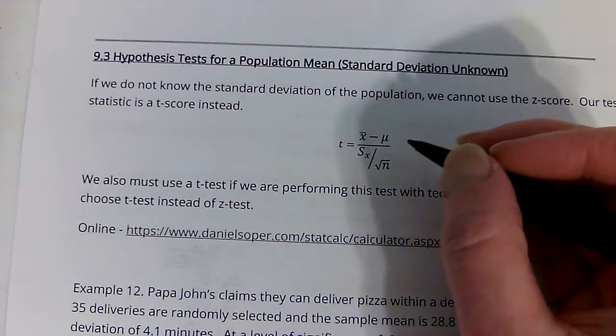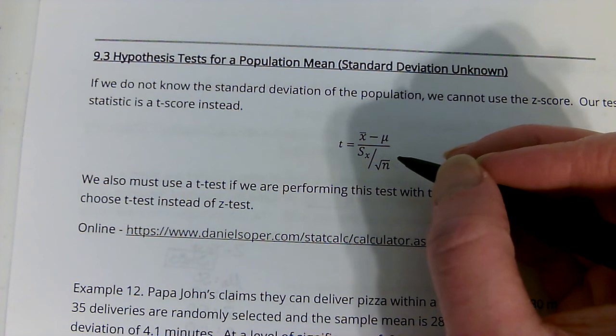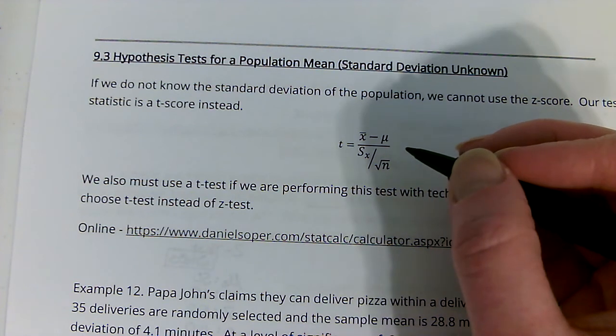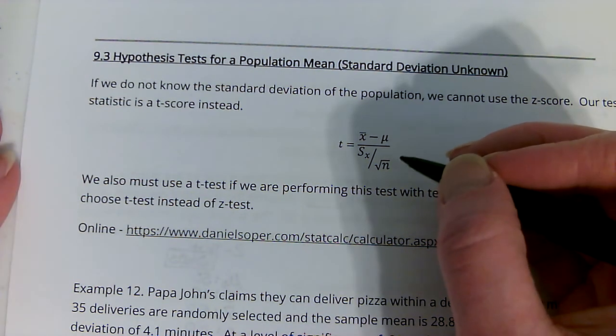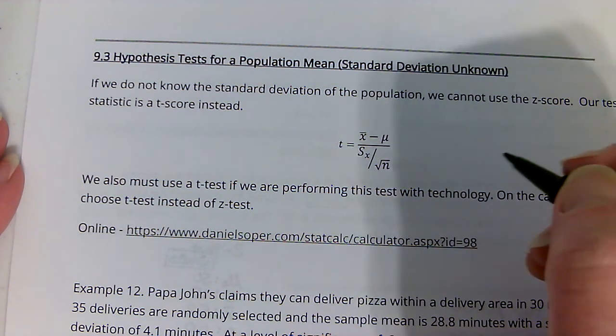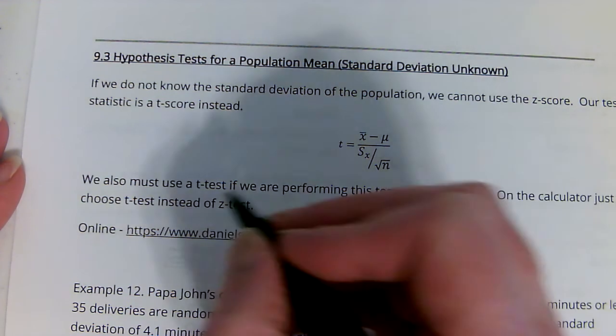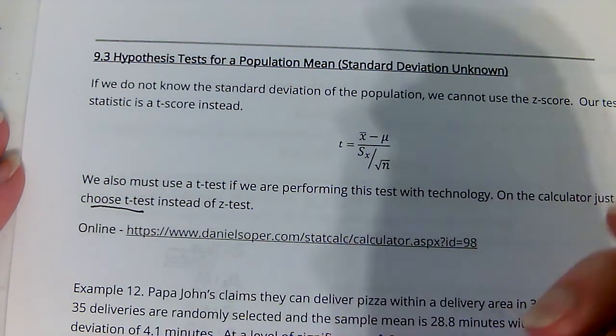Now, the formula to find a t-score is lovely as it can be, and if you would like to use the t-table and do the whole thing by hand, feel free. If you have a TI, that's what I'm going to be showing. All you have to do is choose t-test instead of z-test.